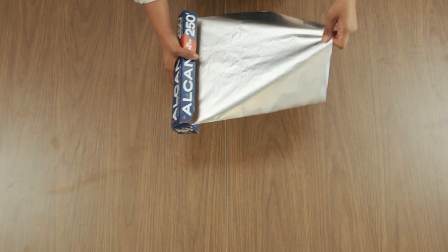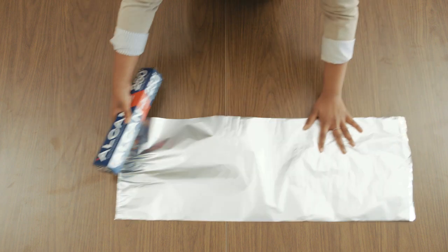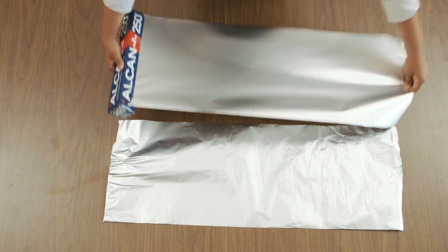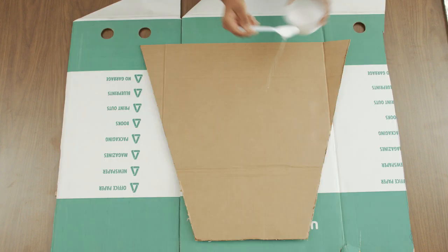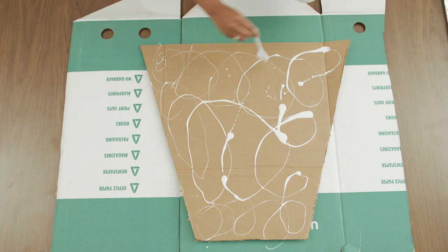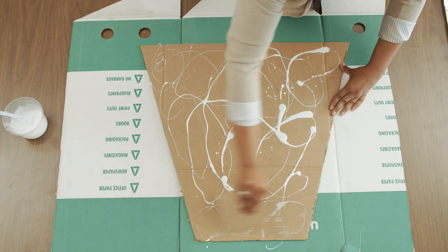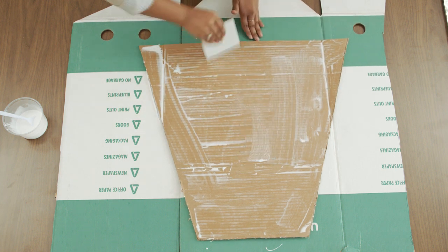Unroll enough aluminum foil to cover one section, keeping it as smooth and flat as possible. Wrinkles and creases in the foil will reduce the efficiency of the reflector. Apply a thin layer of white glue over the entire surface of the cardboard, including corners. Use the flat edge of a piece of scrap cardboard as a squeegee to spread the glue out evenly.